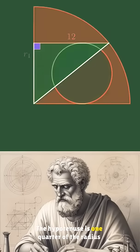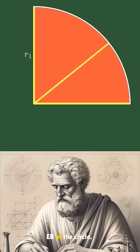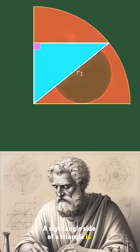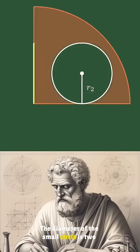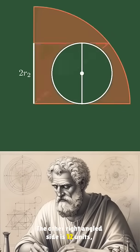The hypotenuse is the radius r1 of the quarter circle. One side of the triangle is the diameter of the small circle, 2 times r2. The other side is 12 units.